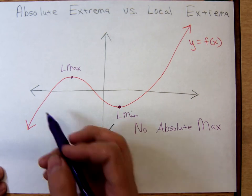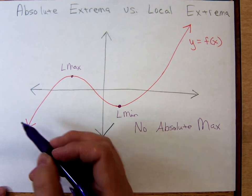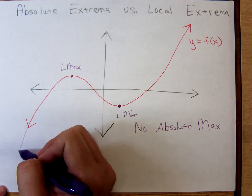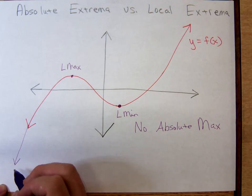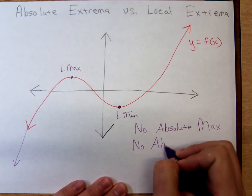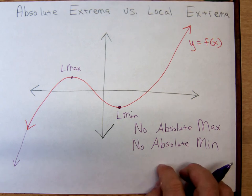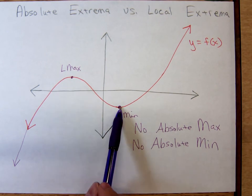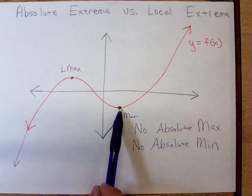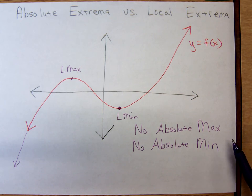Likewise, this function keeps going forever on the left side. Is there one y-value that's smaller than all the others? No, it's getting smaller and smaller, so there's no absolute minimum either. So we have relative extrema — a local maximum and a local minimum — but there's no one absolute maximum value and no one absolute minimum value. The domain of this function is all real numbers from negative infinity to infinity.